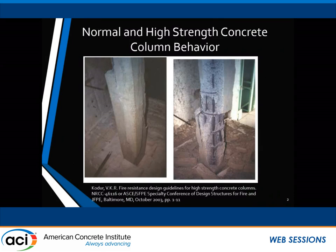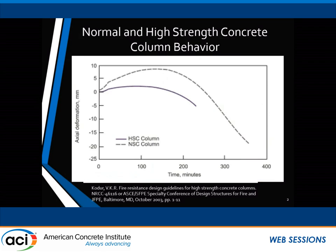I took from the literature a picture that many of you have seen before — a post-fire picture of two columns, one normal strength and one high strength. Looking at these columns, there is a striking difference: one seems to have experienced a lot of spalling and the other not. However, they both failed. One behavior observed is that the deformation characteristics throughout the fire were very different, even though both columns were subjected to the same fire curve.